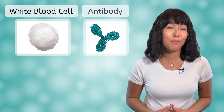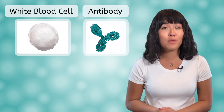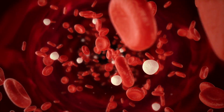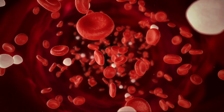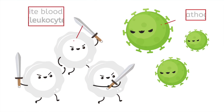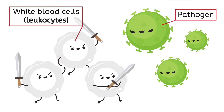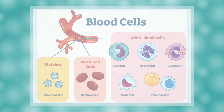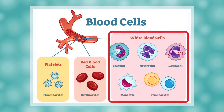Before we talk about the ways that our body protects us, let's get a few important vocab words out of the way. White blood cells and antibodies are two key components of the immune system that work together to defend the body against pathogens. White blood cells, also known as leukocytes, are responsible for identifying and destroying pathogens in the body. There are several different types of white blood cells, each with a specific function, and we'll look at a few different types as we go through the lesson.